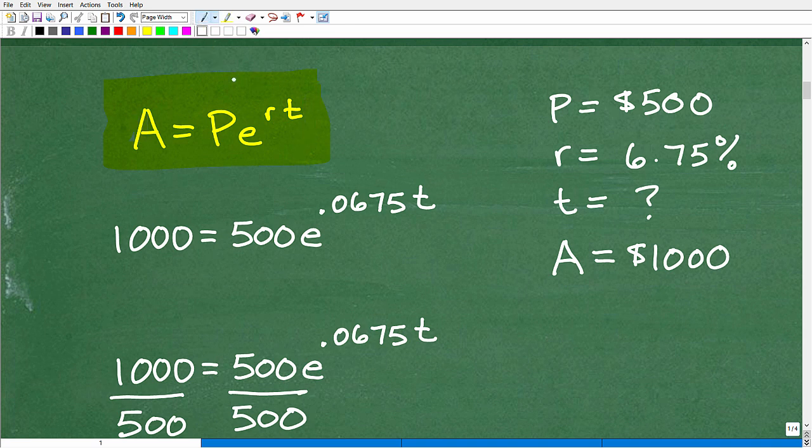So, here is our lovely continuous compound interest formula. And let's see what we have and what we need. So, we know the principal amount is $500. That's our starting amount. We know the rate here is given to us at 6.75%. And we want to know how long. How long is this thing going to take to double? So, T is our unknown variable. We're looking for how many years it's going to take to double. So, that's what T is. We don't know what that is. That's what we're going for. And our amount, our final amount, will be $1,000 because that's the consequence of doubling $500.